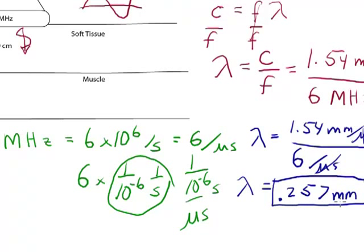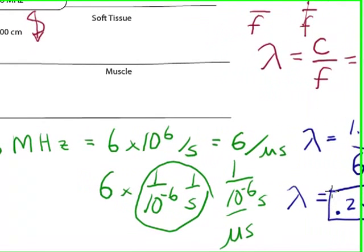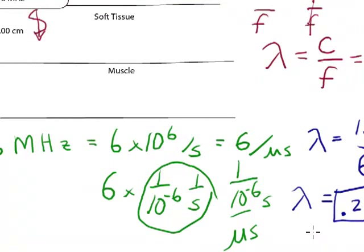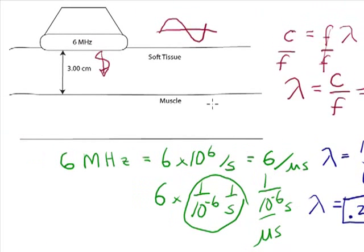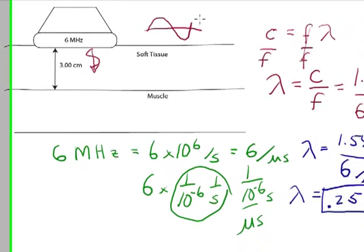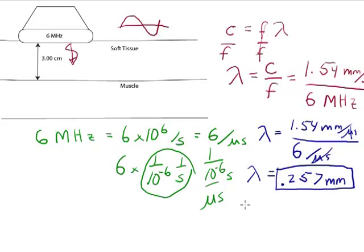And so it would be difficult to resolve anything much smaller than 0.257 millimeters. And we'll see that actually, the resolution is actually somewhat larger than that when we look at a full pulse that may consist of more than one cycle of the waveform.